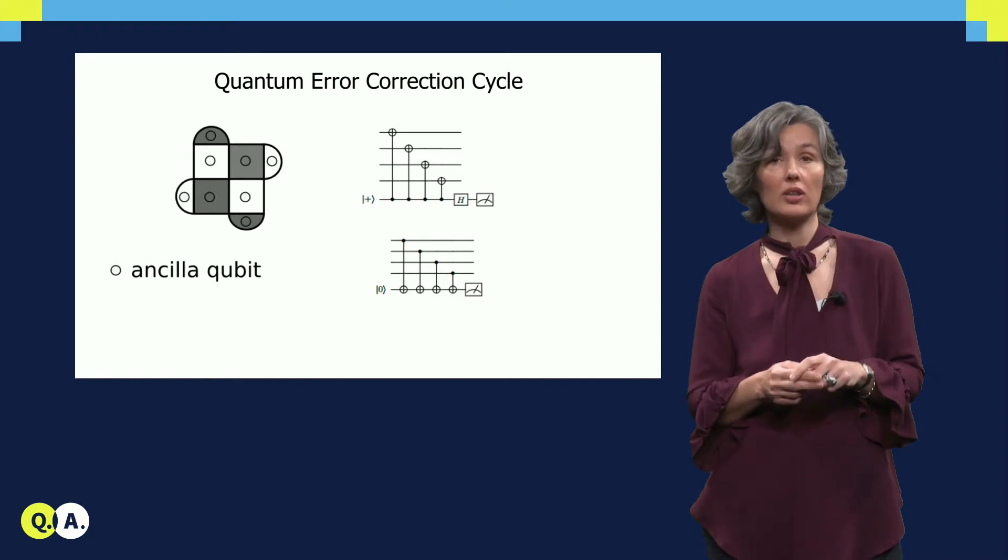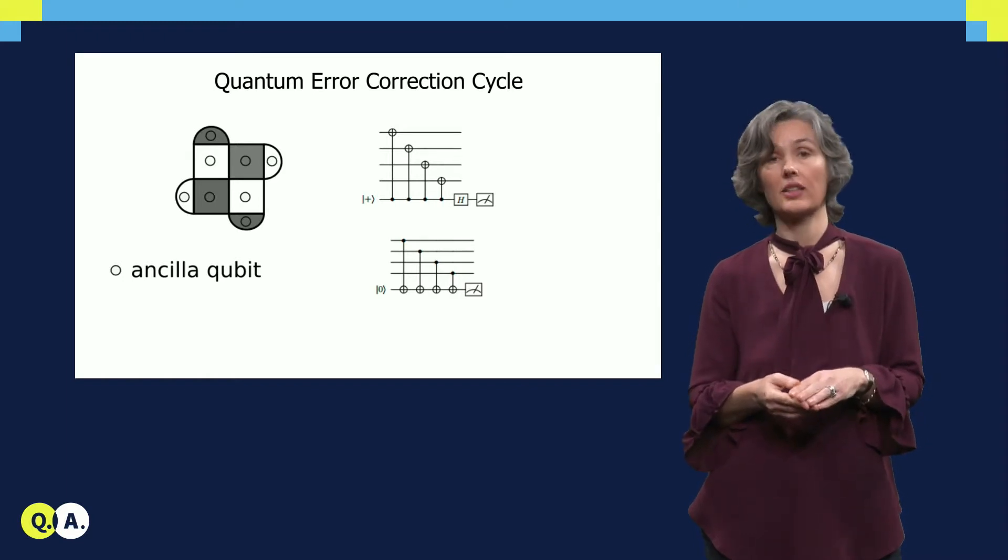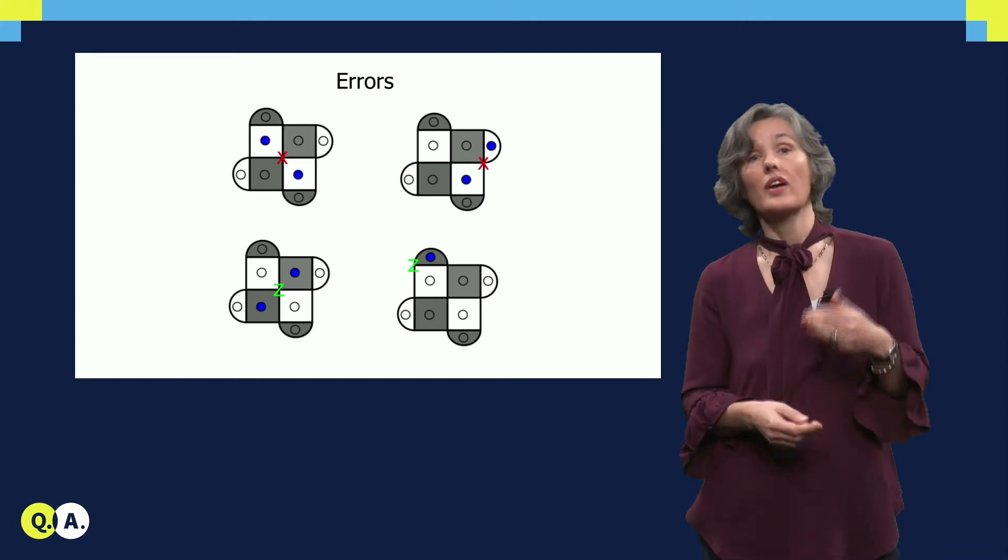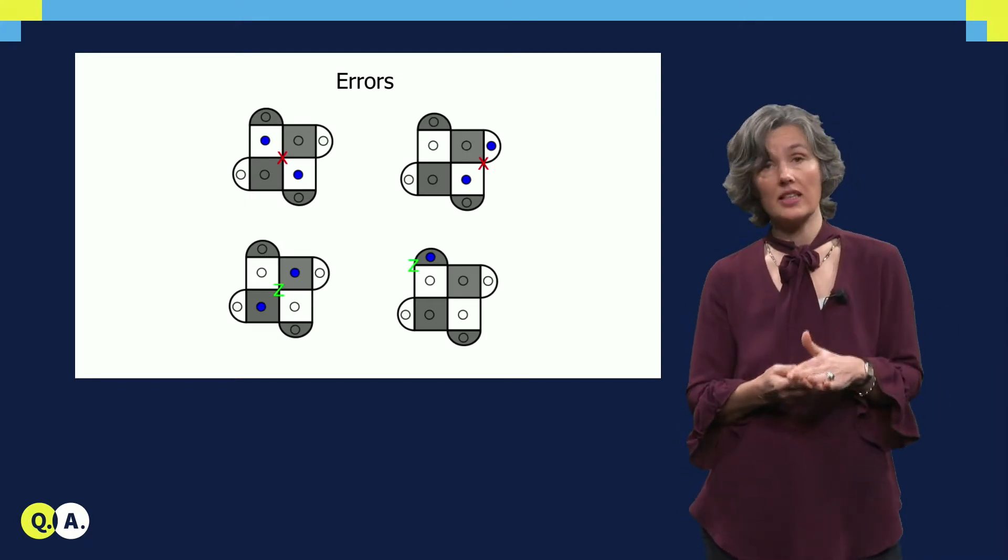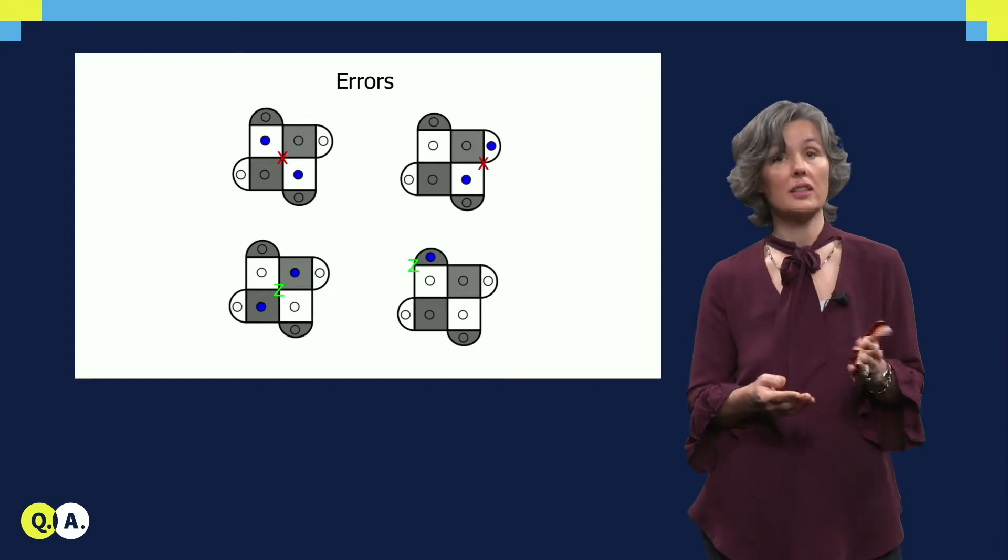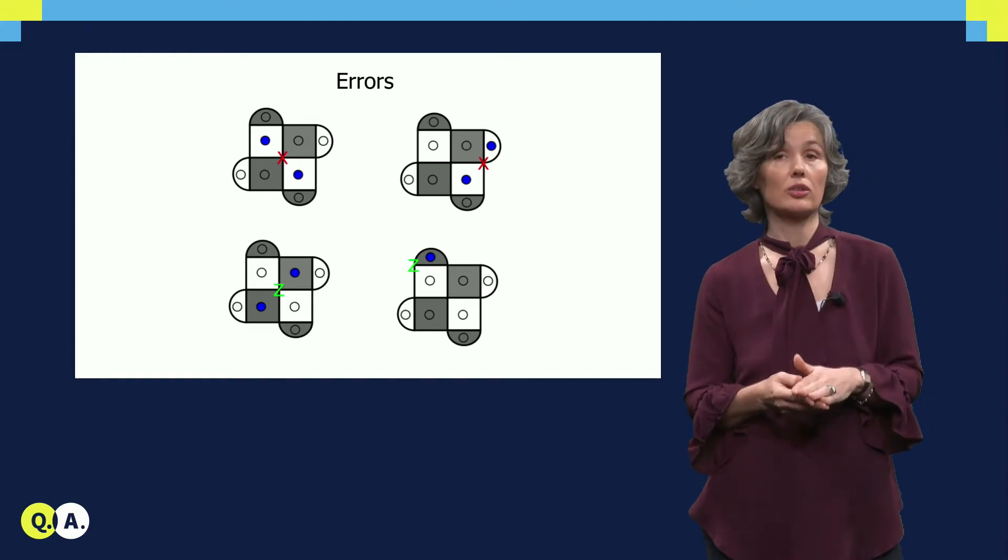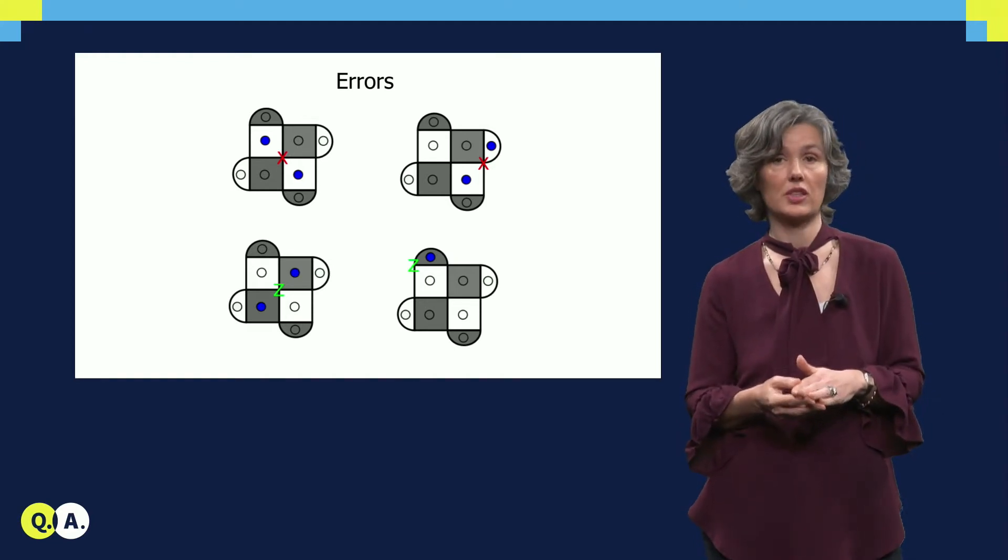Now, one quantum error correction cycle is the execution of these parity checks. So x and z errors on the data qubits are detected by the parity check circuits. You see the ancilla qubits are colored blue when they detect an x or z error.